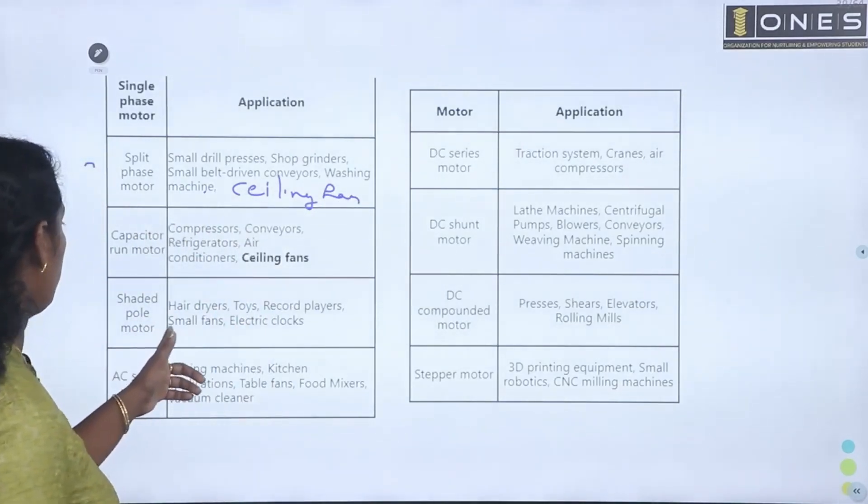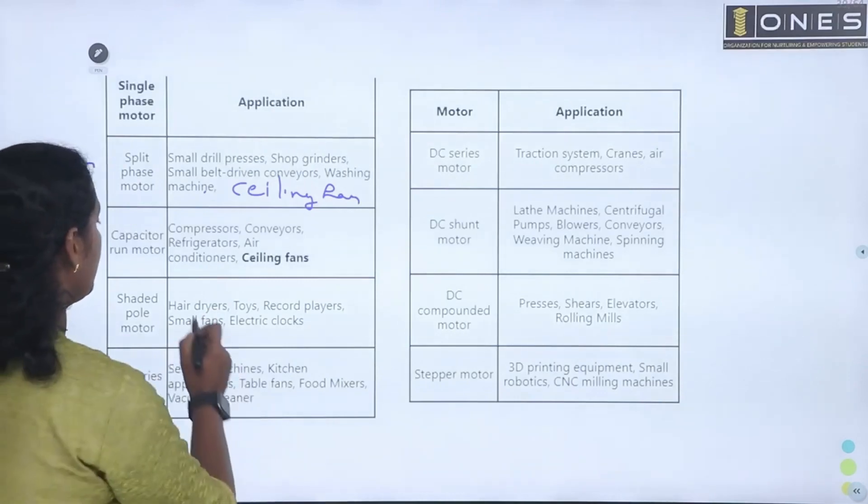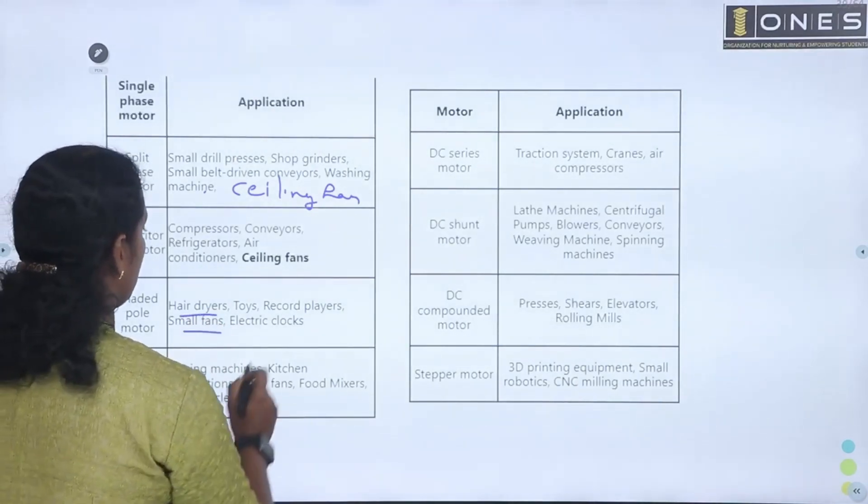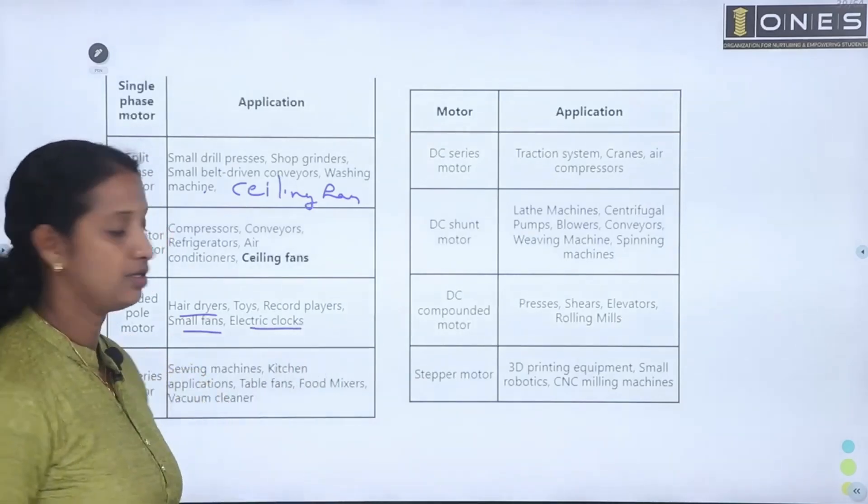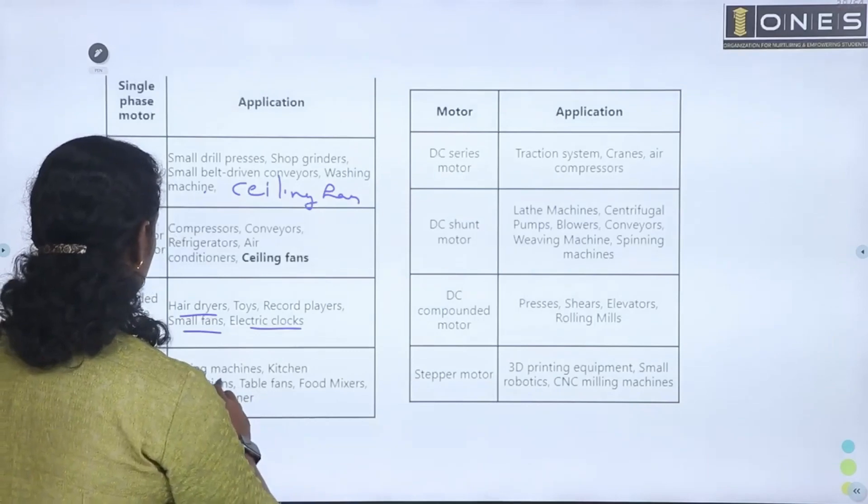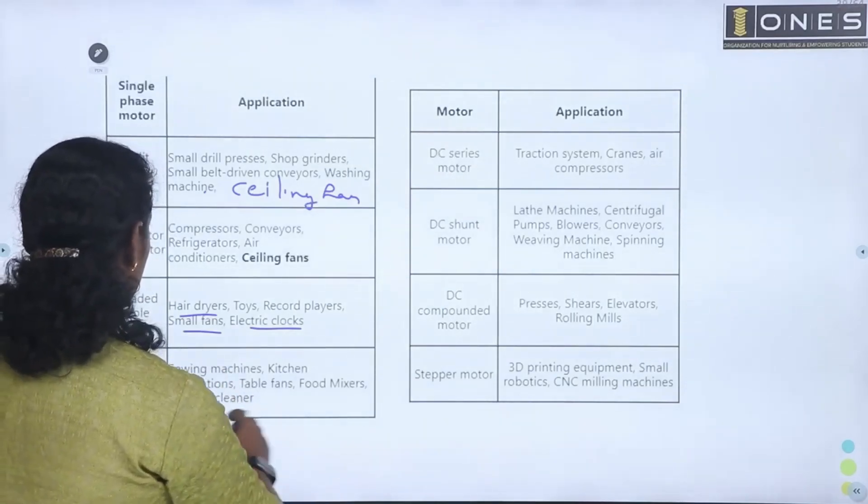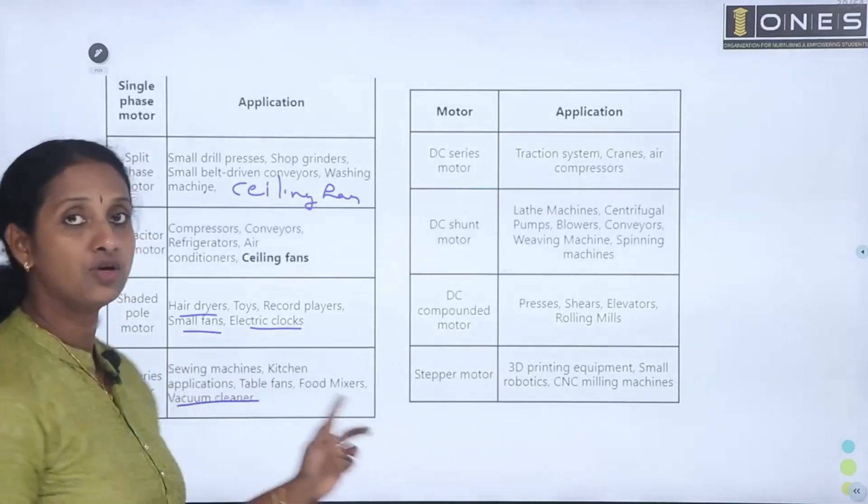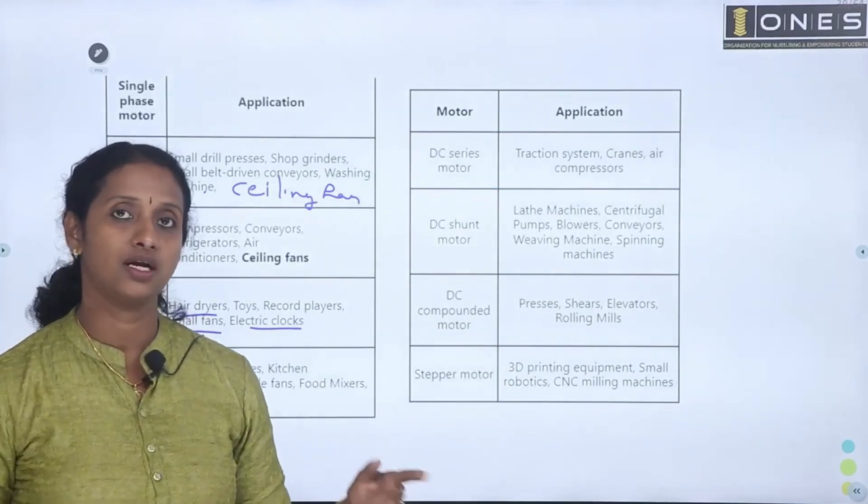Shaded pole motor is used for hair dryer, small fan, electric lock. AC series motor - what is the universal motor?